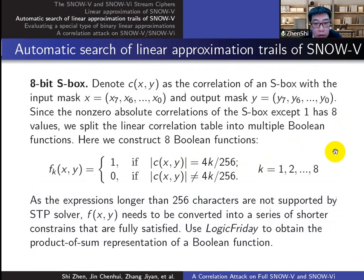Here is the characterization of the S-box of AES. We first adopt the idea of Abdelkhalek to split the linear correlation table into eight boolean functions. Then we need to get the product of sum representation of each boolean function and convert it into a series of shorter constraints that are fully satisfied by the software Logical Friday.